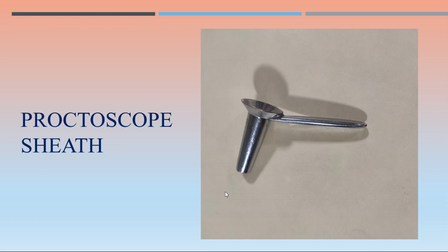The next one is the proctoscope sheath. The proctoscope sheath looks like this — this part goes inside the anal canal after placing the patient in a suitable position. Just try to identify: this is the proctoscope sheath, used in per-rectal examination and proctoscopy examination.